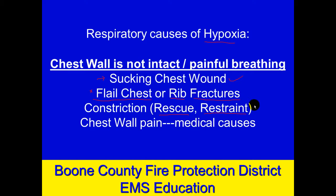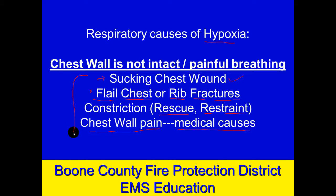It could also be inappropriate restraint. Positional asphyxia — which we'll address later in the curriculum — is when a person is restrained face down. The typical cases involve a fairly large individual with a large body mass restrained face down, which causes impaired chest wall movement, keeping them from exchanging enough air, which can lead to hypoxia. There are also medical causes of chest wall pain, like pleurisy — inflammation of the pleural lining, which is very painful — or muscular strain. Anything that keeps the chest wall from moving like it should can produce a respiratory system cause of hypoxia.